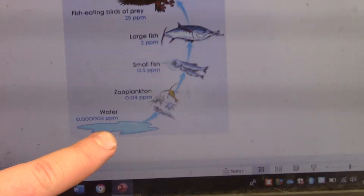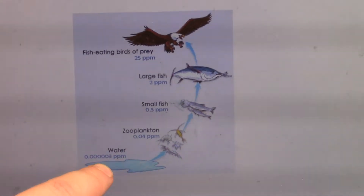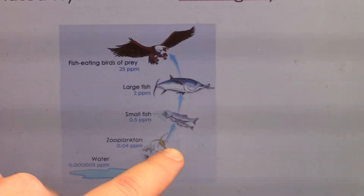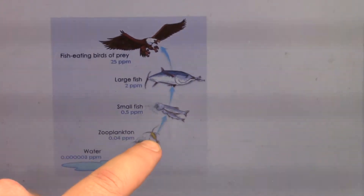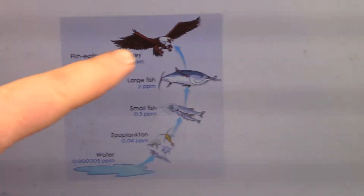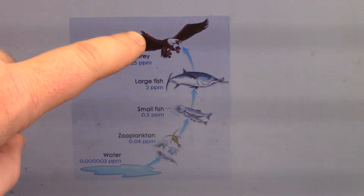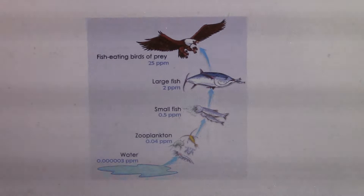So DDT, for example, gets into a water supply — it might not exist in high concentrations in the phytoplankton, but then zooplankton eats the phytoplankton and there's less zooplankton present than phytoplankton. But the same amount of DDT gets transferred into this trophic level, so now there's the same amount of DDT spread across fewer organisms. This continues up the food chain, so it ends up concentrating in apex predators. That's biomagnification.